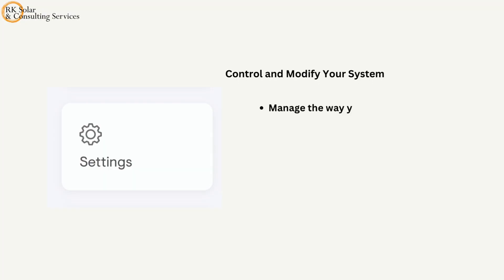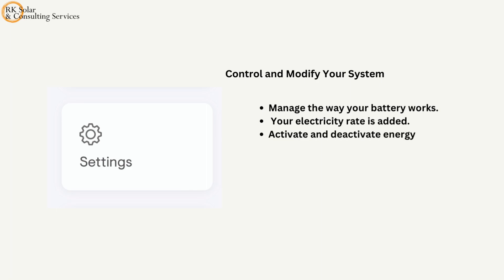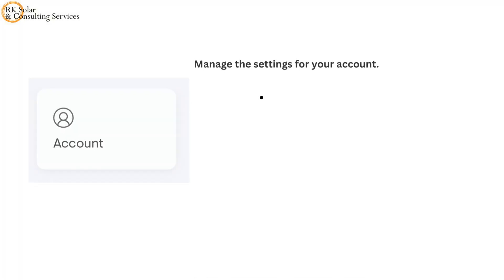Navigate to the settings page to control and modify your system. Manage the way your battery works. Your electricity rate is added. Activate and deactivate energy-hungry devices. You have control over your grid connection.